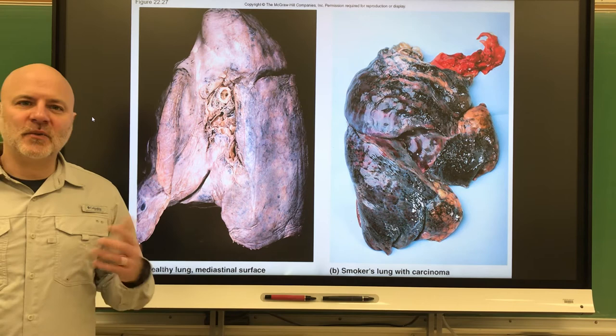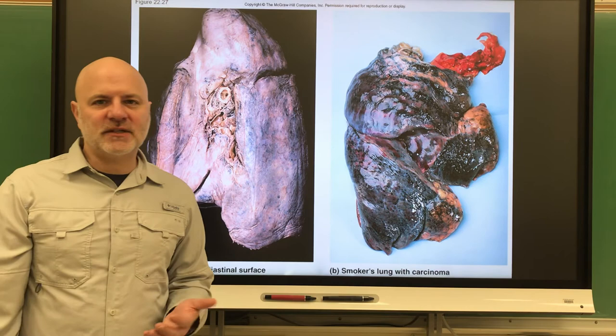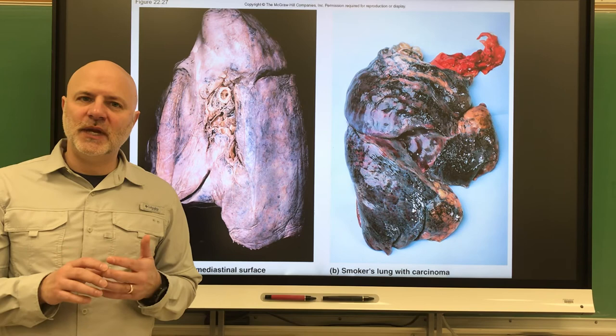The last one is the one you really don't want, and this is called small cell or oat cell carcinoma. This originates in the pulmonary bronchi and invades the mediastinum tissue, which is tissue essentially between the lungs and the heart.